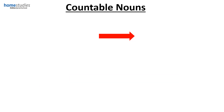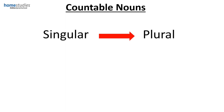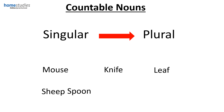Now I am going to show you some nouns which are countable and I would like you to change them from the singular form into their plural form. The words are as follows: mouse, knife, leaf, sheep, spoon, and fox. You have approximately 20 seconds to change those singular nouns into plural nouns. You may begin.